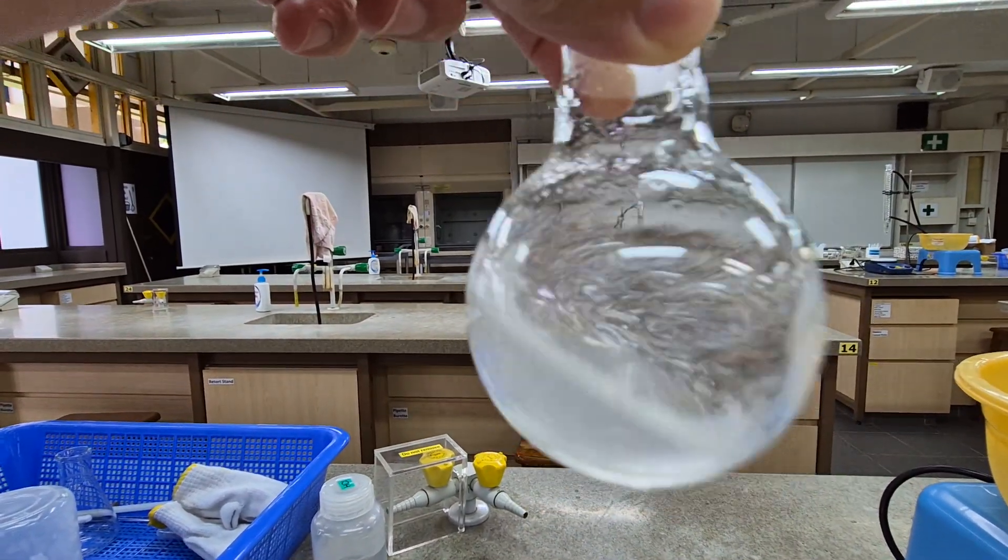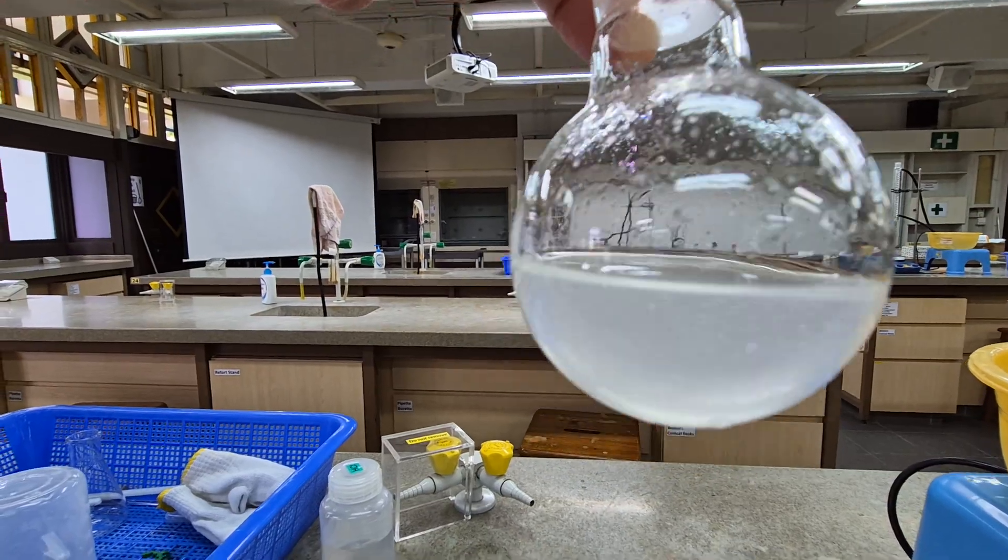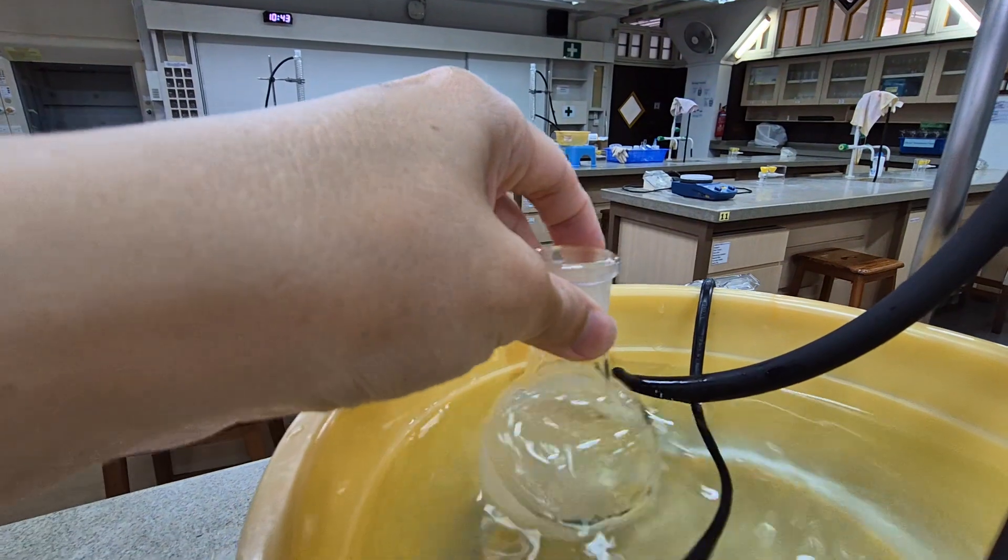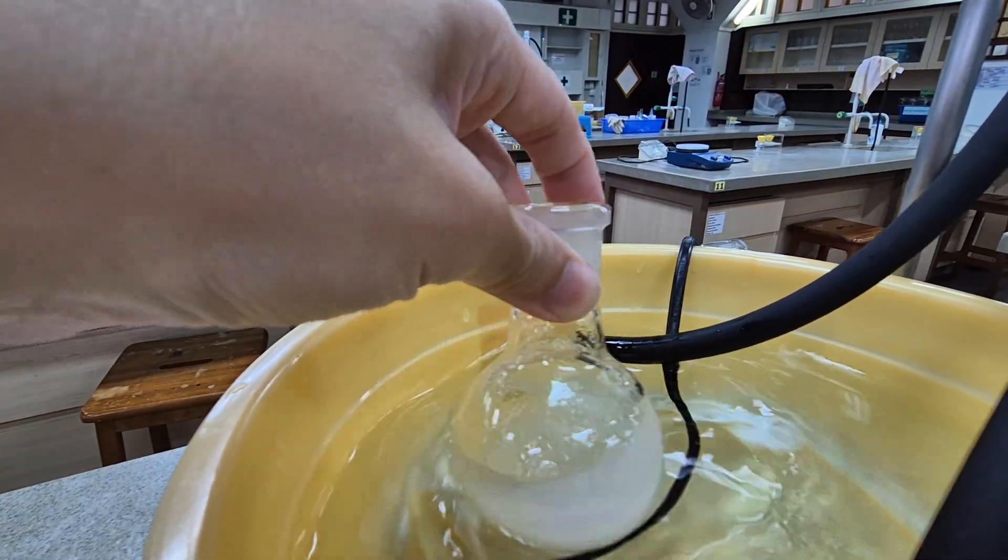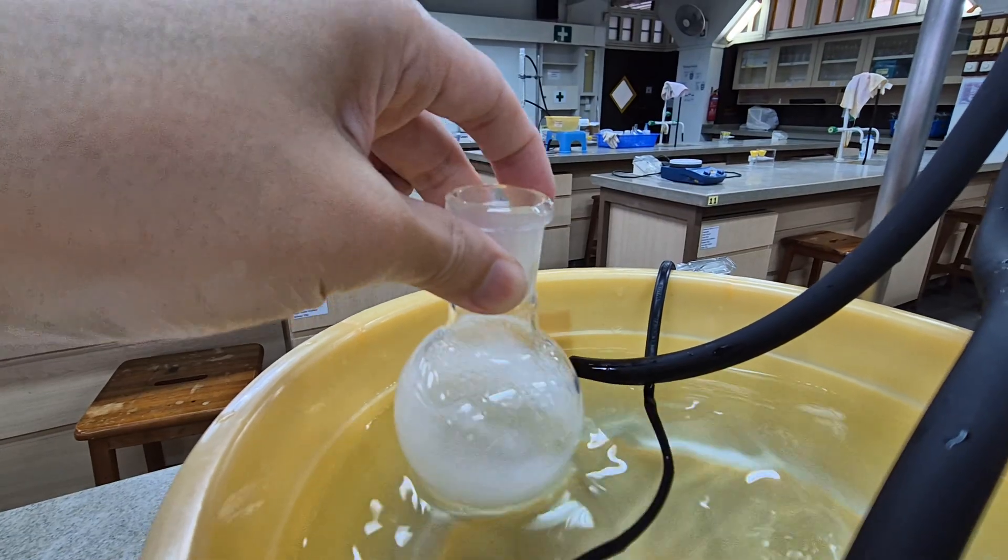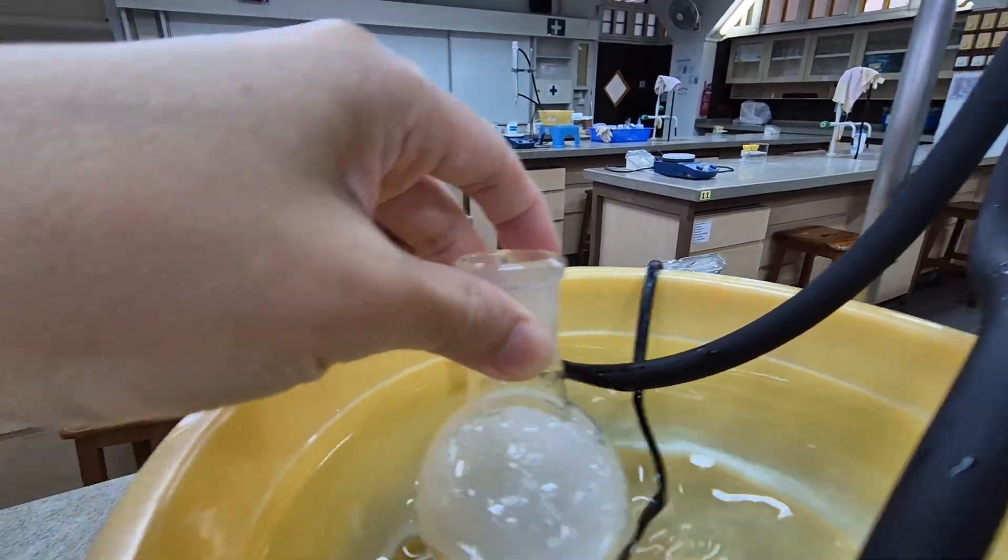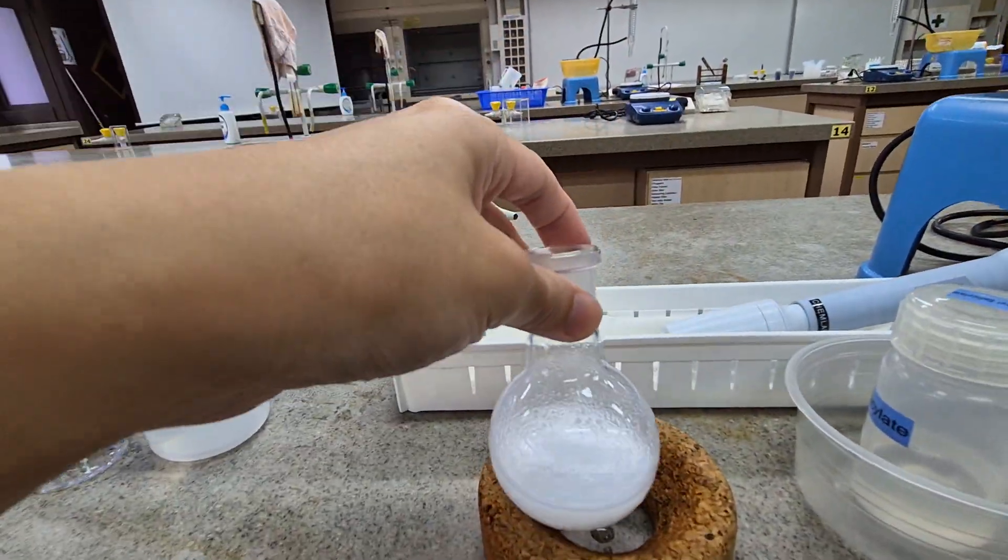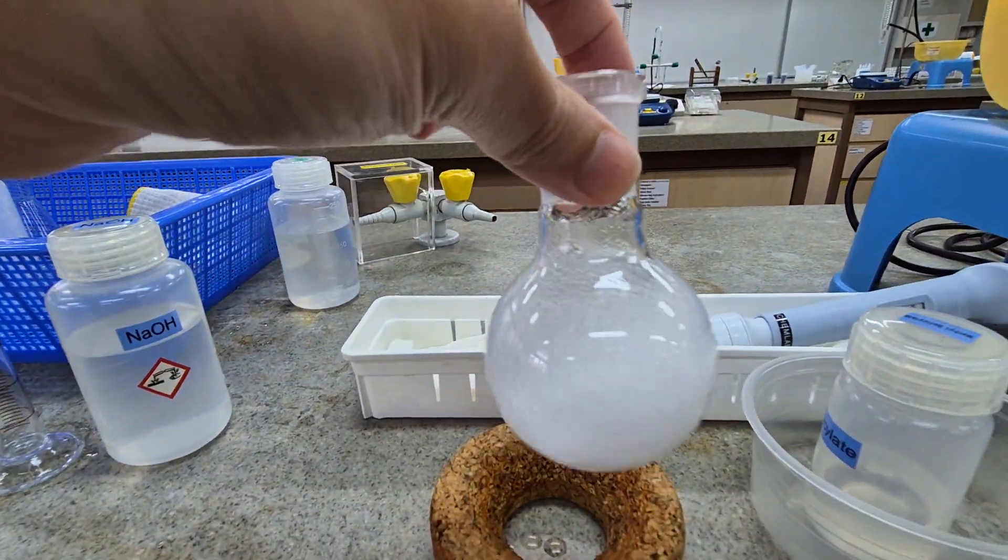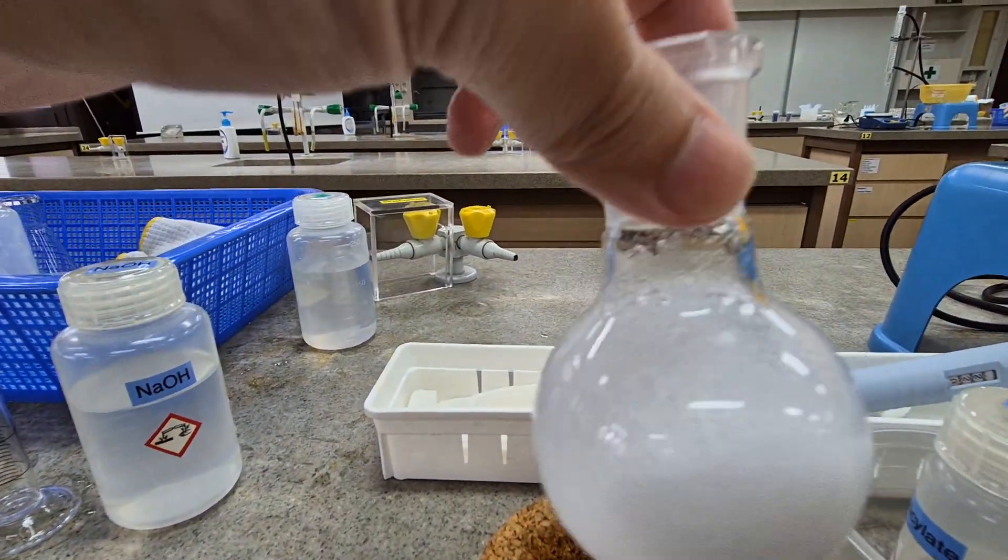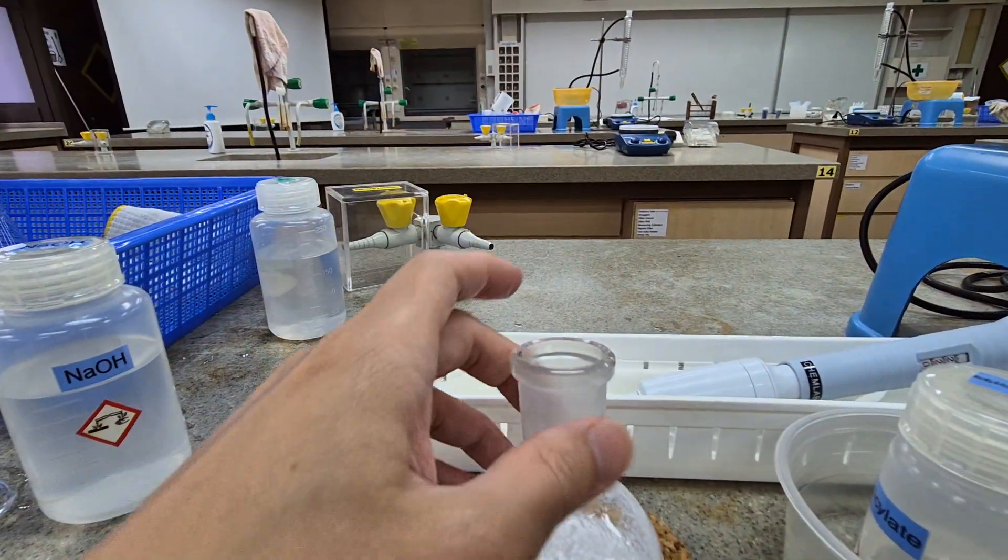If I cool it further, then more and more of it will appear. I think it's quite obvious now. You get quite a bit of white precipitate coming out. It's a bit difficult to swirl now because you get quite a bit of it.